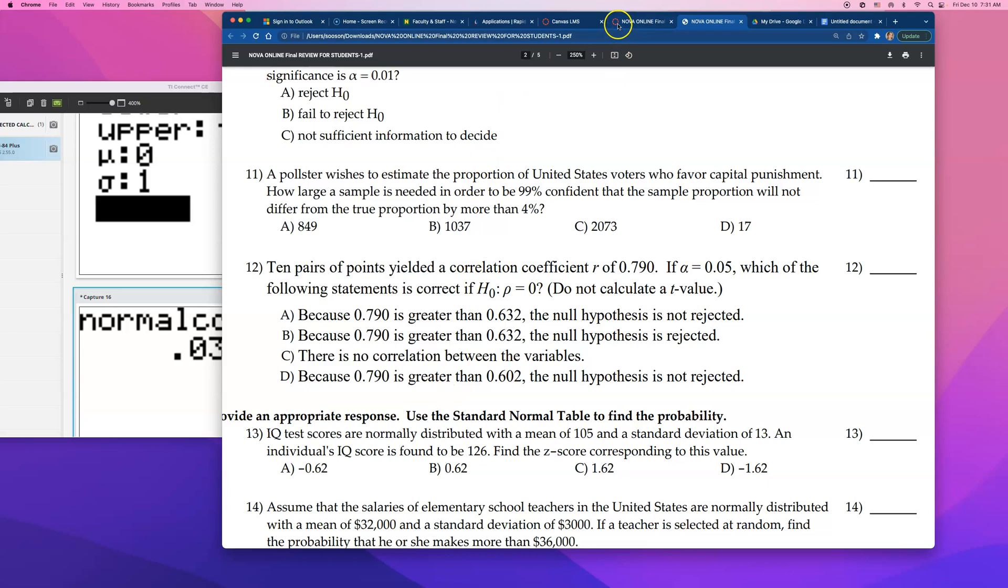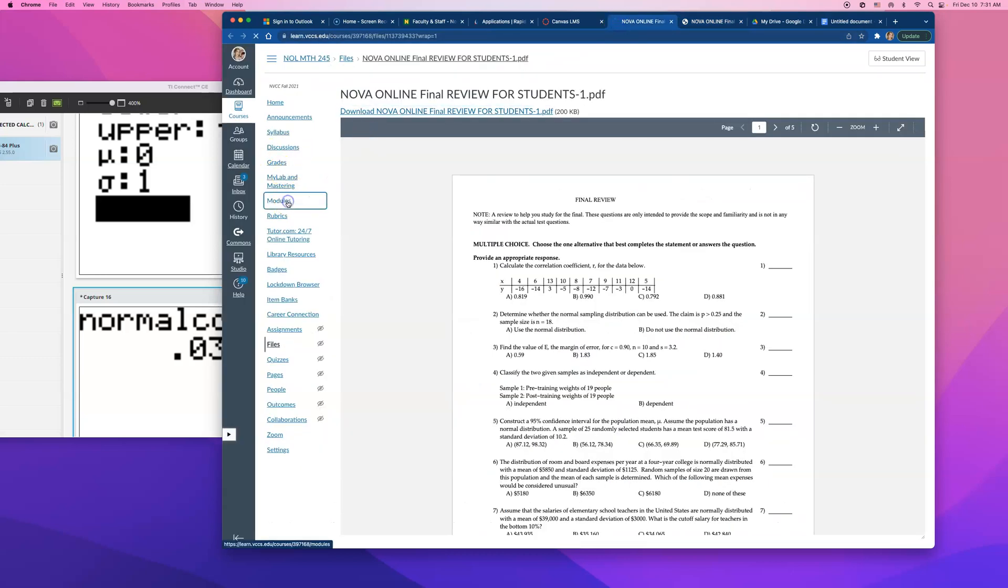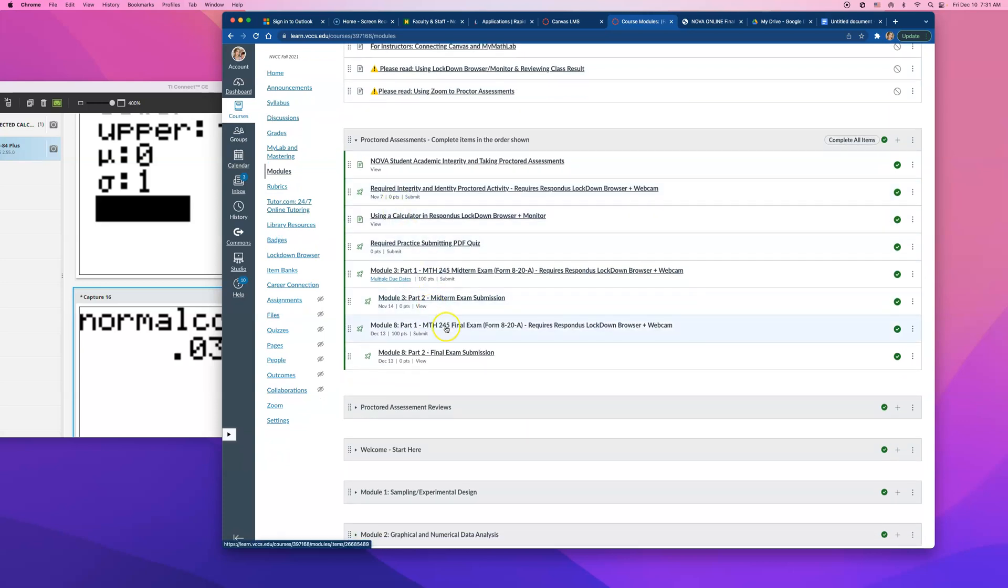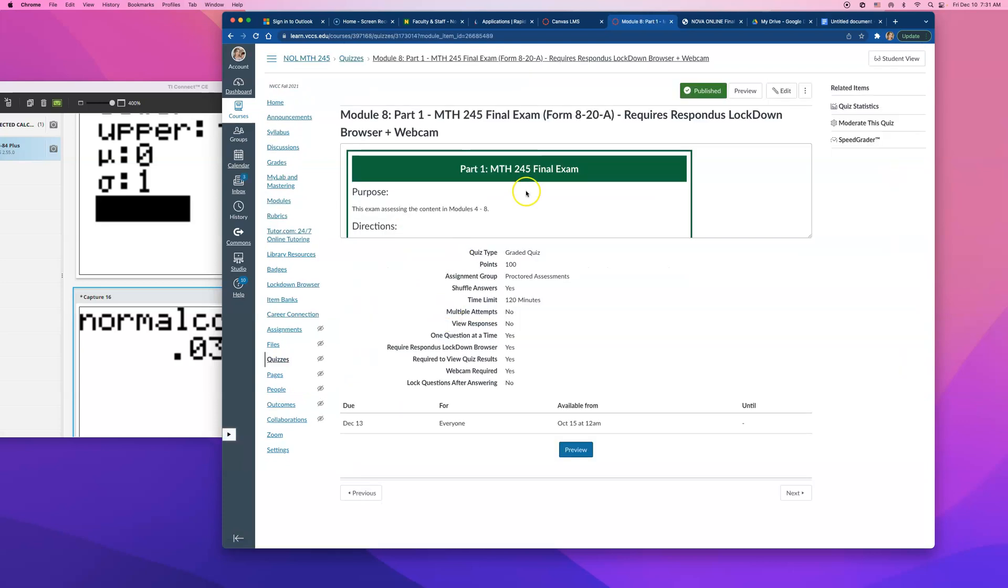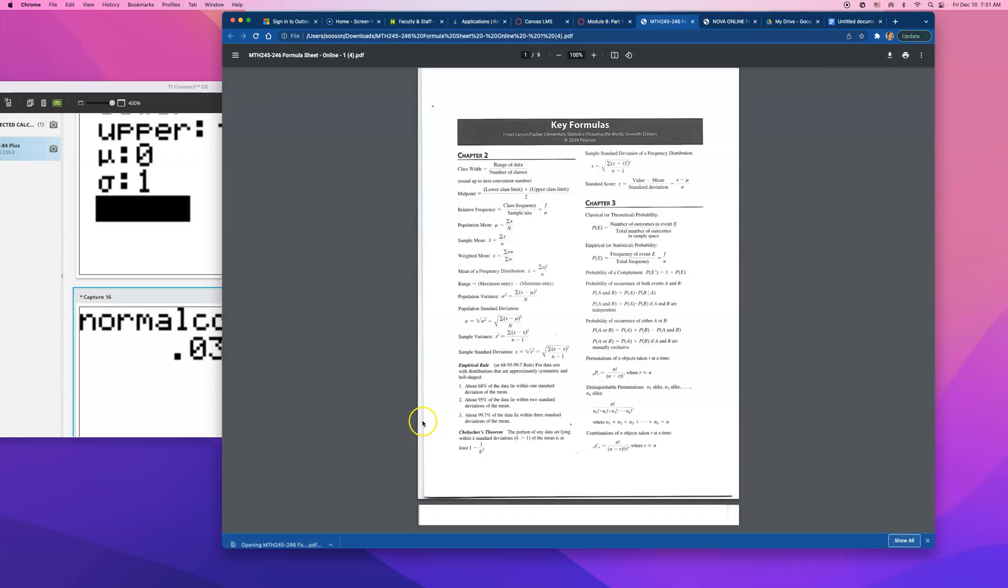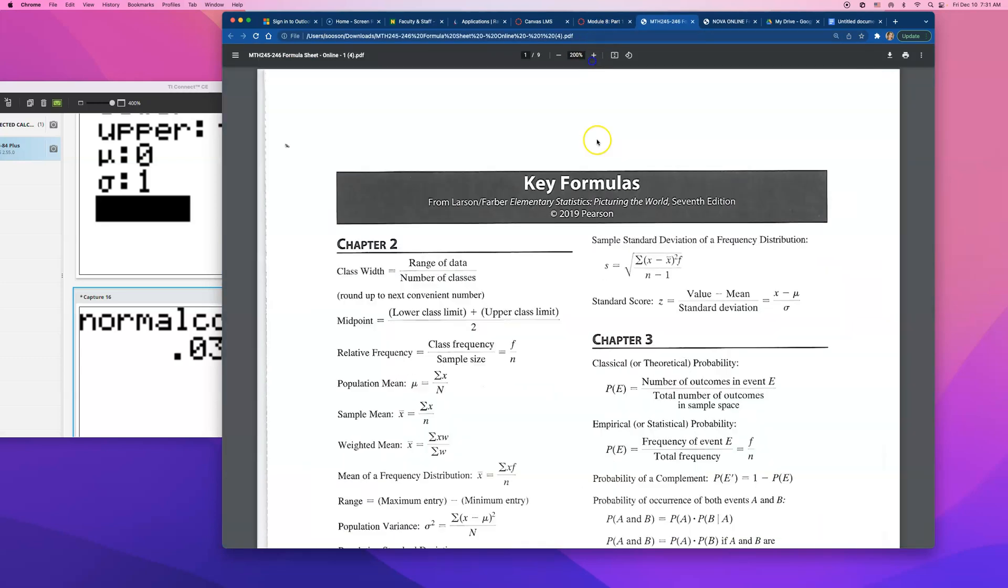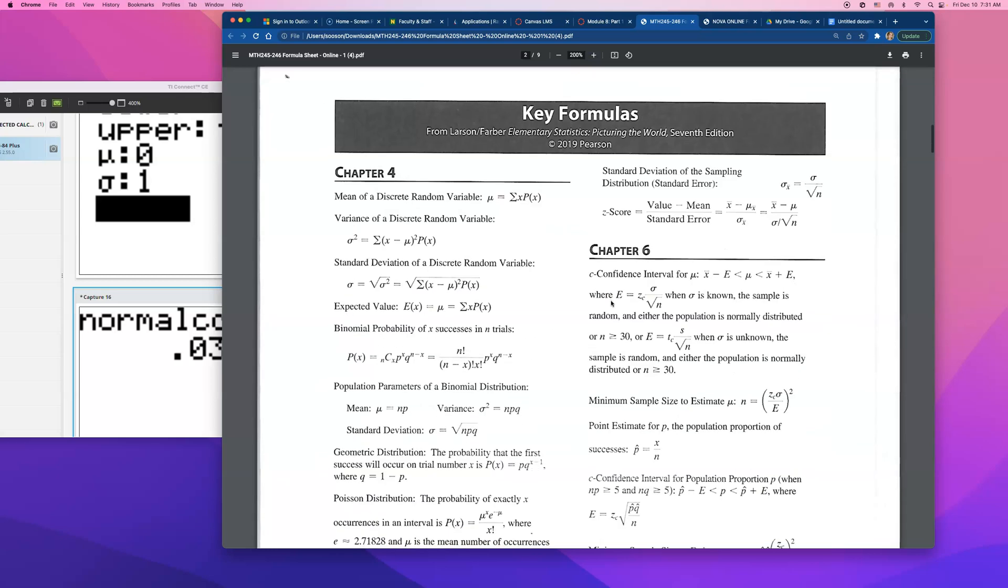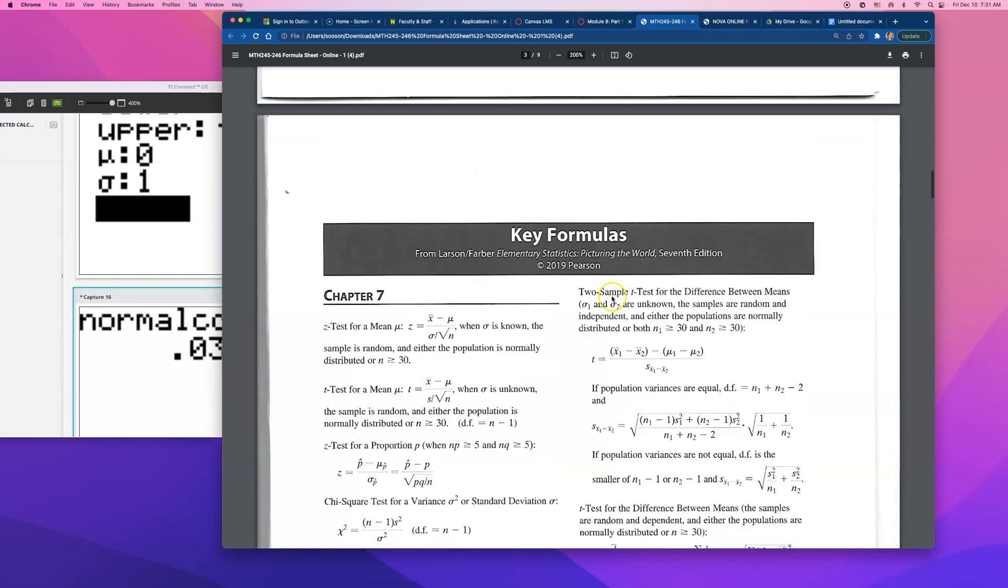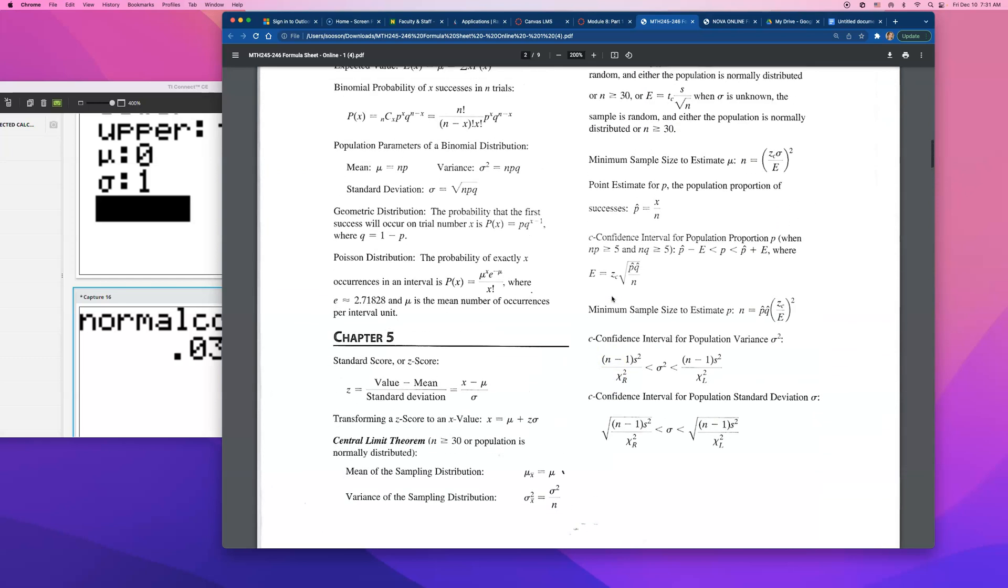So let me go open up that formula sheet real quick. And you guys will have access to this formula sheet on your final exam. So if I just open up that final and download that formula sheet, this is the sample size formula. So let's go find that. I think it's in Chapter 6.